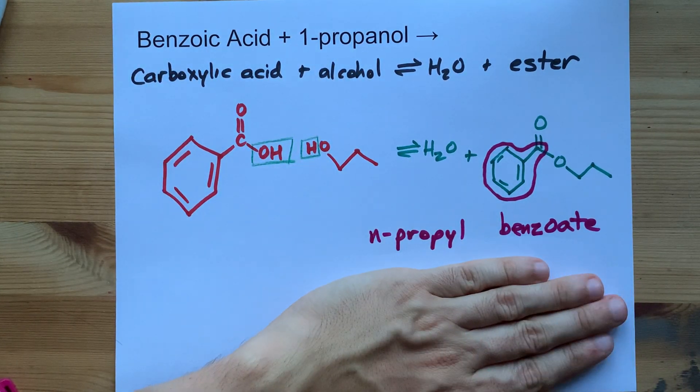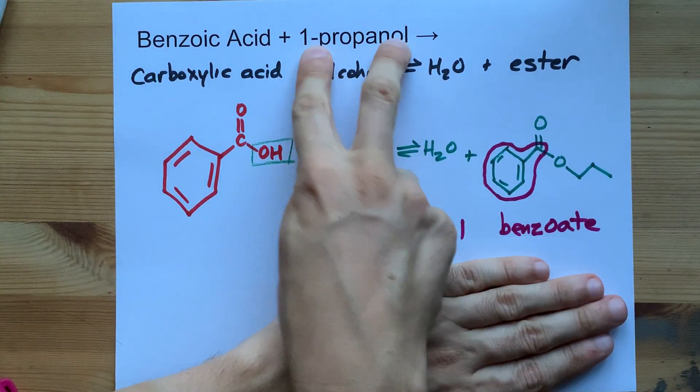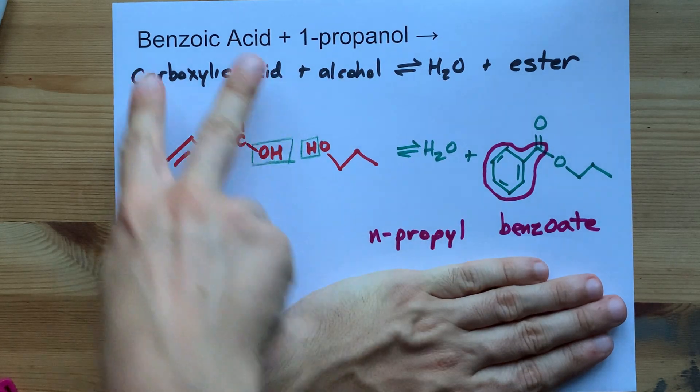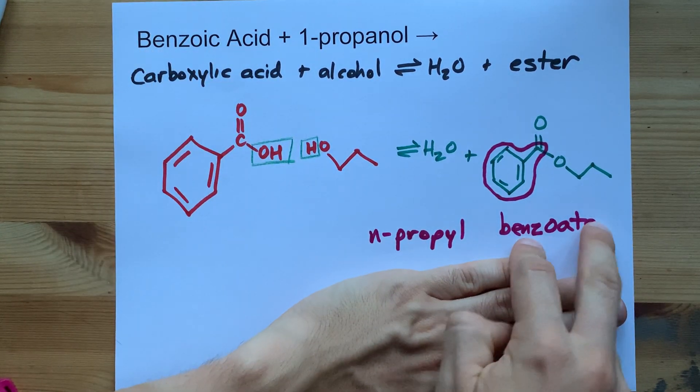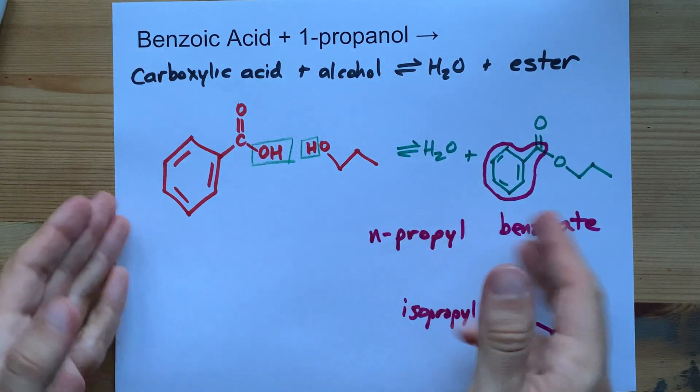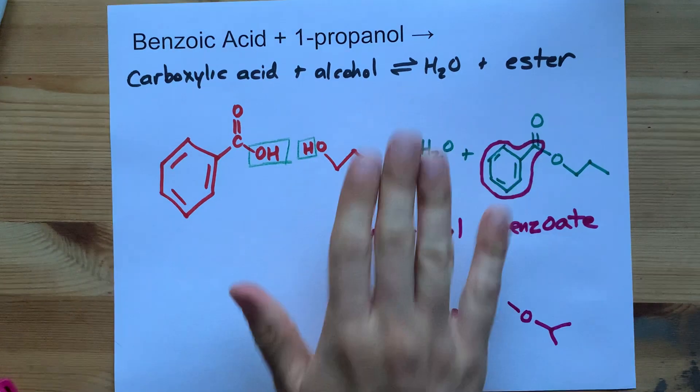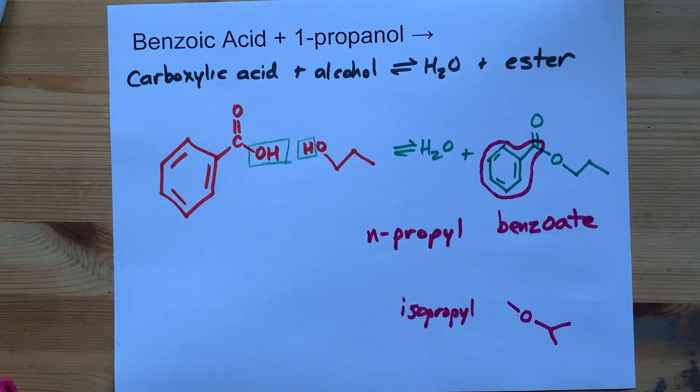Note that the alcohol gives you the n-propyl part and the carboxylic acid gives you the benzoate part. Best of luck.